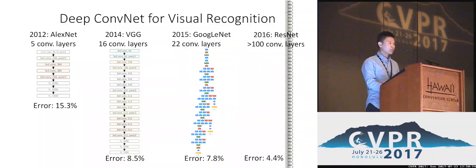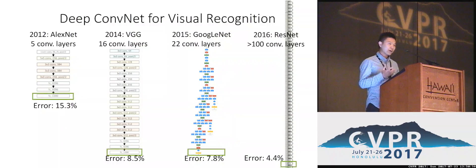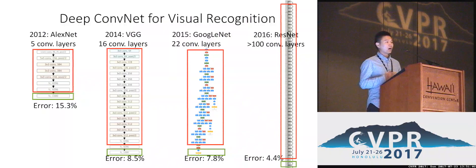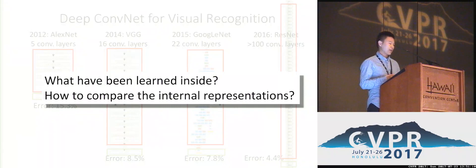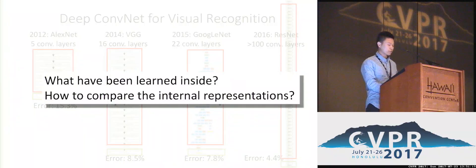But as you know, deep learning is more like representation learning. The final output is just one part of the story. Another part of the story is the internal representations. Here are the two central questions we explore in our work: What has been learned inside those different architectures? And how do we compare the internal representations across those different architectures?